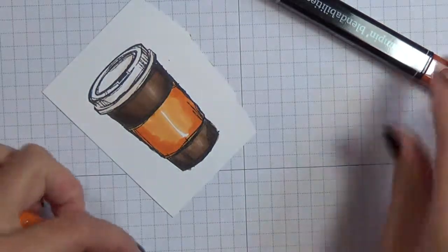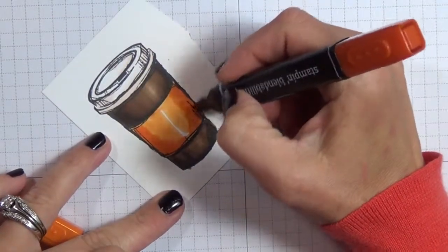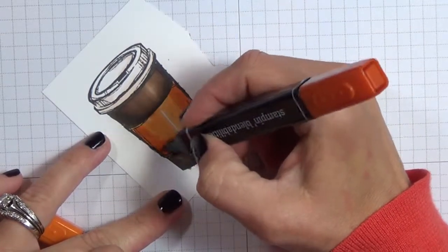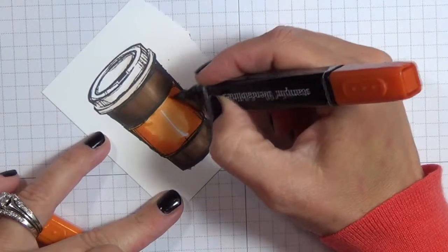Coloring in circles is sort of a Copic marker thing, or maybe it's just an alcohol marker thing. Because by coloring in circles, you really get a lot of the ink on there.